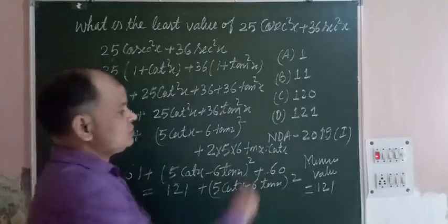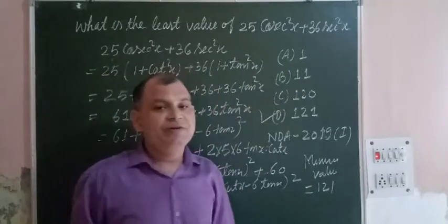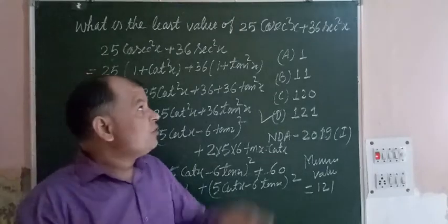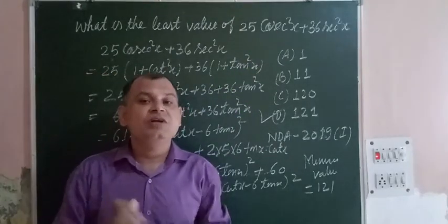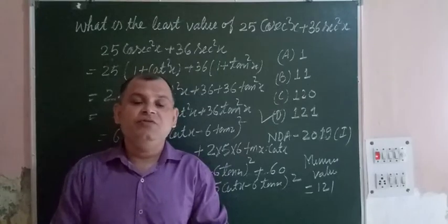So the answer to this question is B) 121. The minimum value of 25 cosec²x + 36 sec²x is 121, student. I hope you got it.